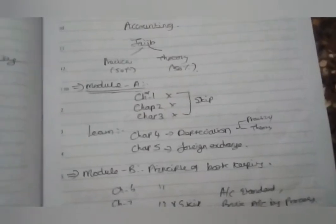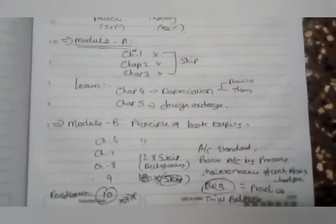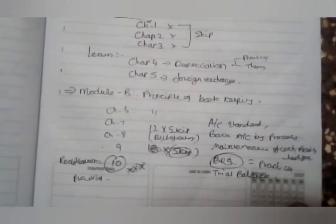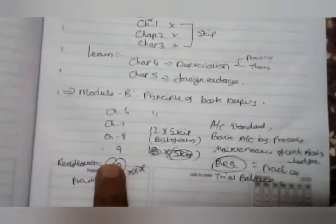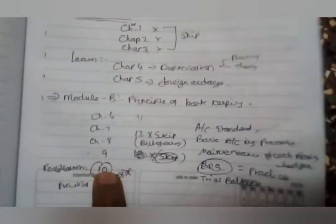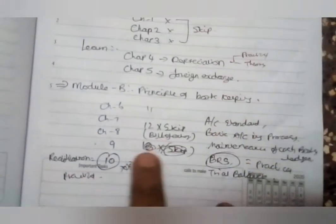You will skip this module. First, we will study the Depreciation and Formation. Next module, that is the principles of bookkeeping. There is a six-month toll. You will skip this module. This module is the 10th module, the first part of rectification.